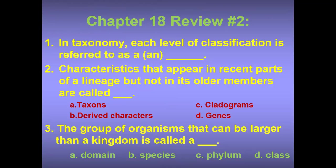Let's do some revision. One: in taxonomy, each level of classification is referred to as a or an what? Two: characteristics that appear in recent parts of a lineage but not in its older members are called what? Three: the group of organisms that can be larger than a kingdom is called a — is it domain, species, phylum, or class? Pause the video and answer these questions in your notebooks and send them to me when finished.